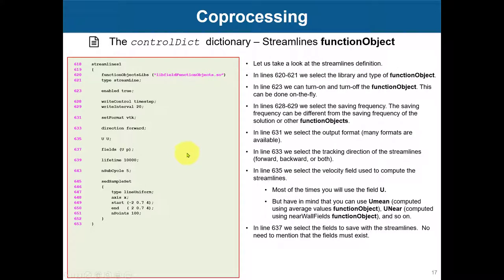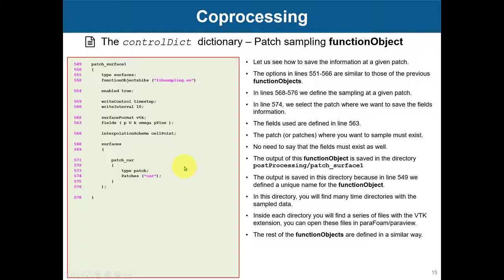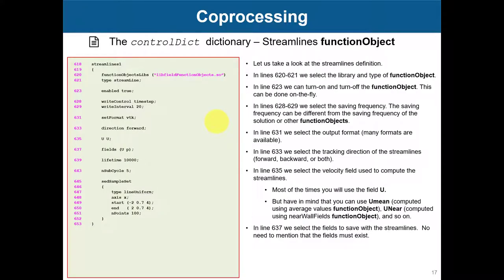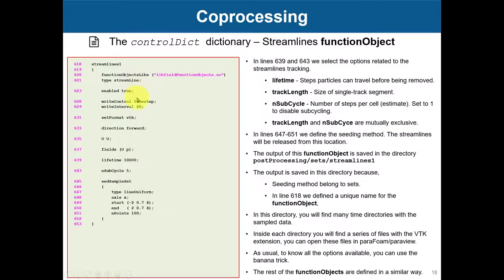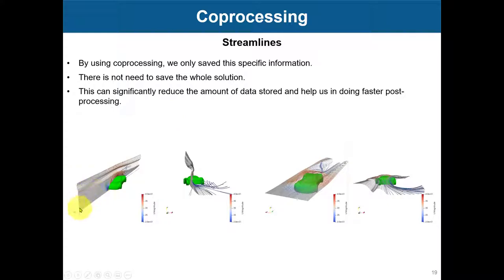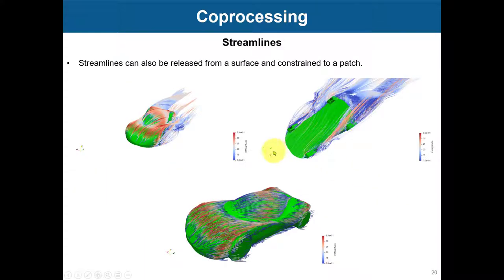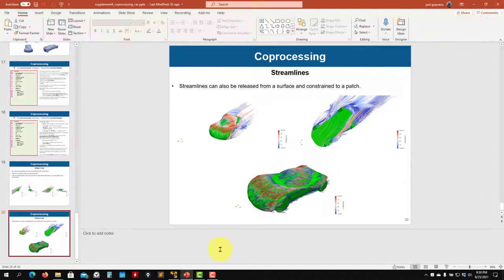Then we have streamlines — something similar. You have some options specific to streamlines, and here you want to release streamlines from a line. You can release streamlines from a plane — there are many options. You can play with these options later. These are specific options for how you integrate those streamlines. In this case you have a vertical line and you are only saving these streamlines — you don't need to save your whole field. And these are streamlines attached to the near-wall body or attached to the surface, which can really reduce the amount of data that you are saving.